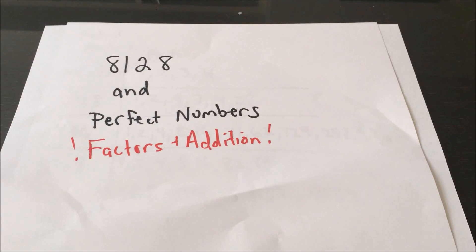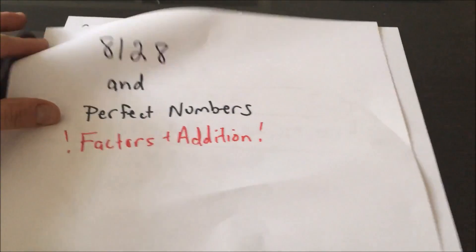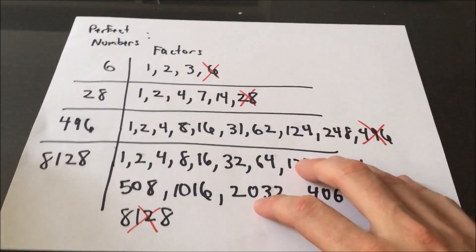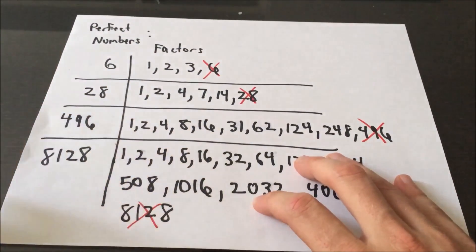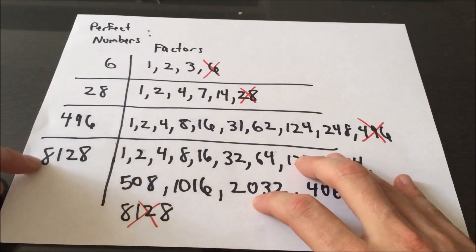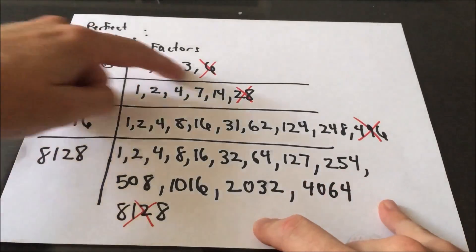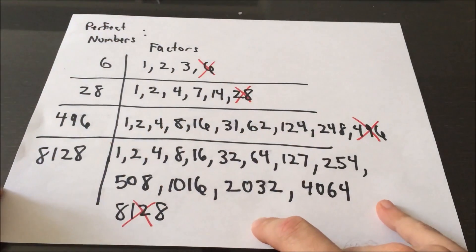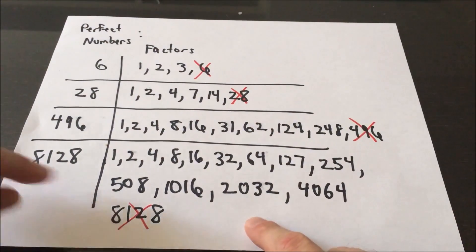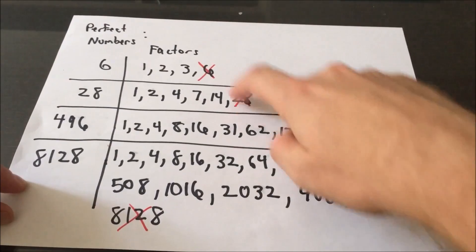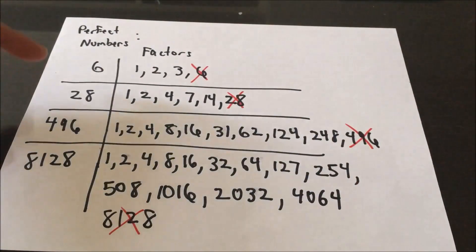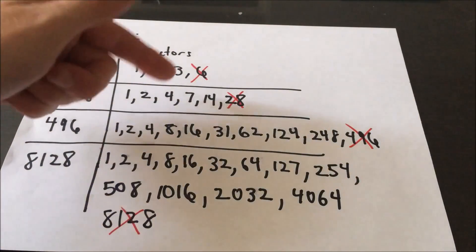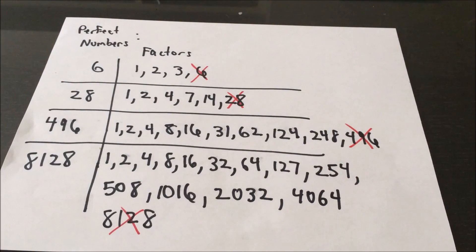So perfect numbers basically have to do with how the numbers factor and with addition. So here on the left side, I've got the first four perfect numbers listed, 6, 28, 496, 8,128. And on the right side, I have the factors of each of those four numbers. But notice I have the number itself in each case crossed out. Okay, so the factors of 6, 1, 2, 3, and 6. Let's omit the 6. 28, 1, 2, 4, 7, 14, 28. Again, we'll omit the 28.